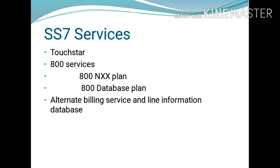Next are the services of Signaling System Number 7. SS7 performs different services like Touch Star, 800 services, and alternate billing services. Touch Star is also known as CLASS — Custom Local Area Signaling Services. It is a group of switch-controlled services that provide users with call management capabilities such as call return, call forwarding, repeat dialing, call tracing, and caller ID.